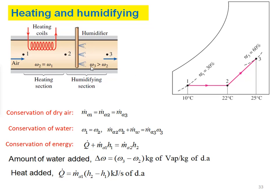From state point 2 to 3, moisture content is added from the humidifier by spraying water. As a result, temperature also increases when the sprayed water temperature is higher than state point 2 temperature, and water content increases as well.